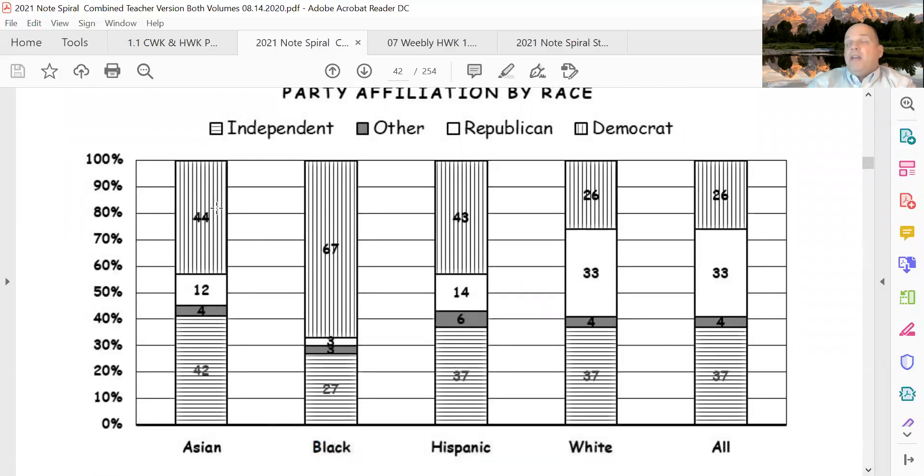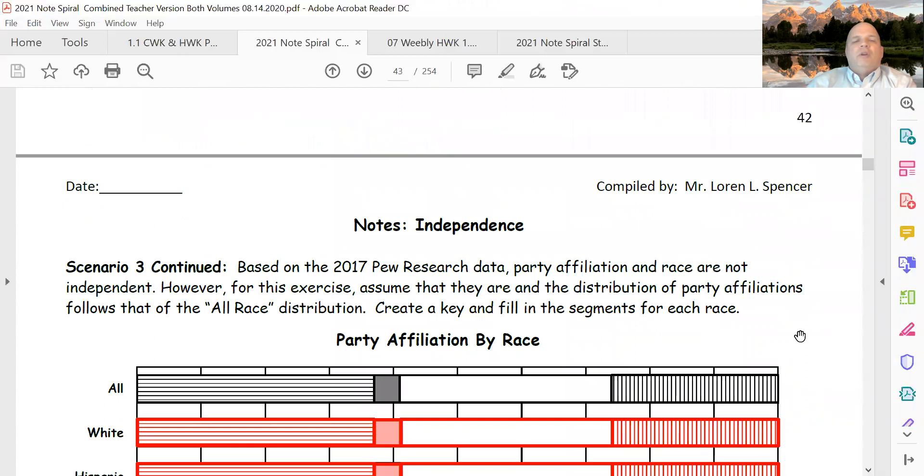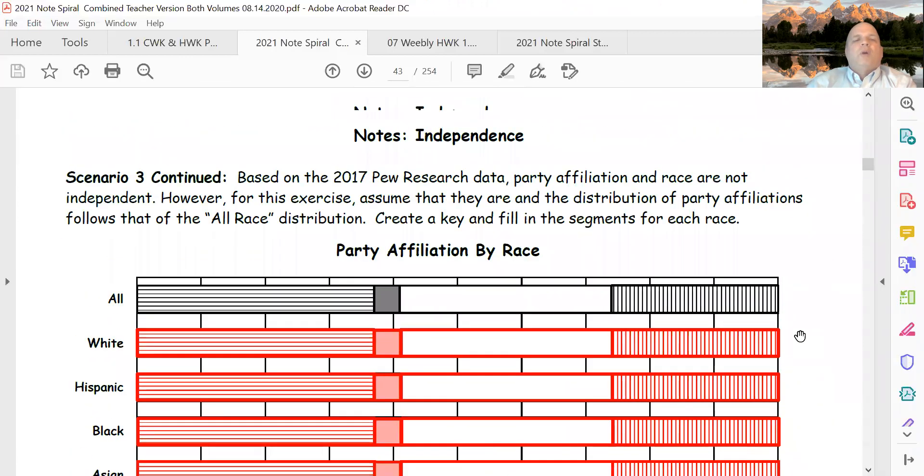We know we're supposed to be proportional if they're independent. Well, since the segments are not proportional, they're not equal across the different categories of race, then consequently they are not independent. So basically party affiliation is dependent upon race according to that Pew Research poll, and that's on page 42 of your notes.